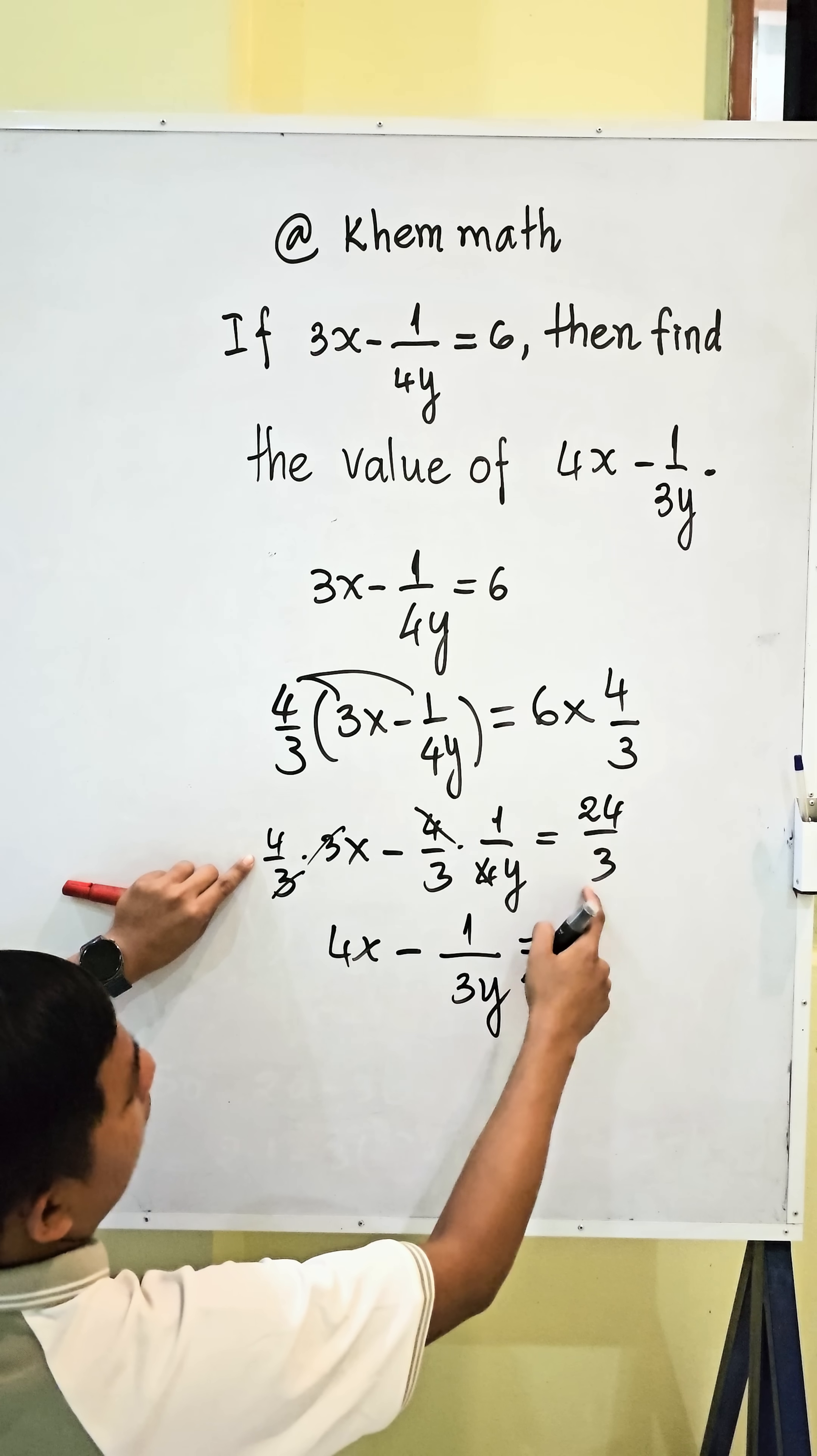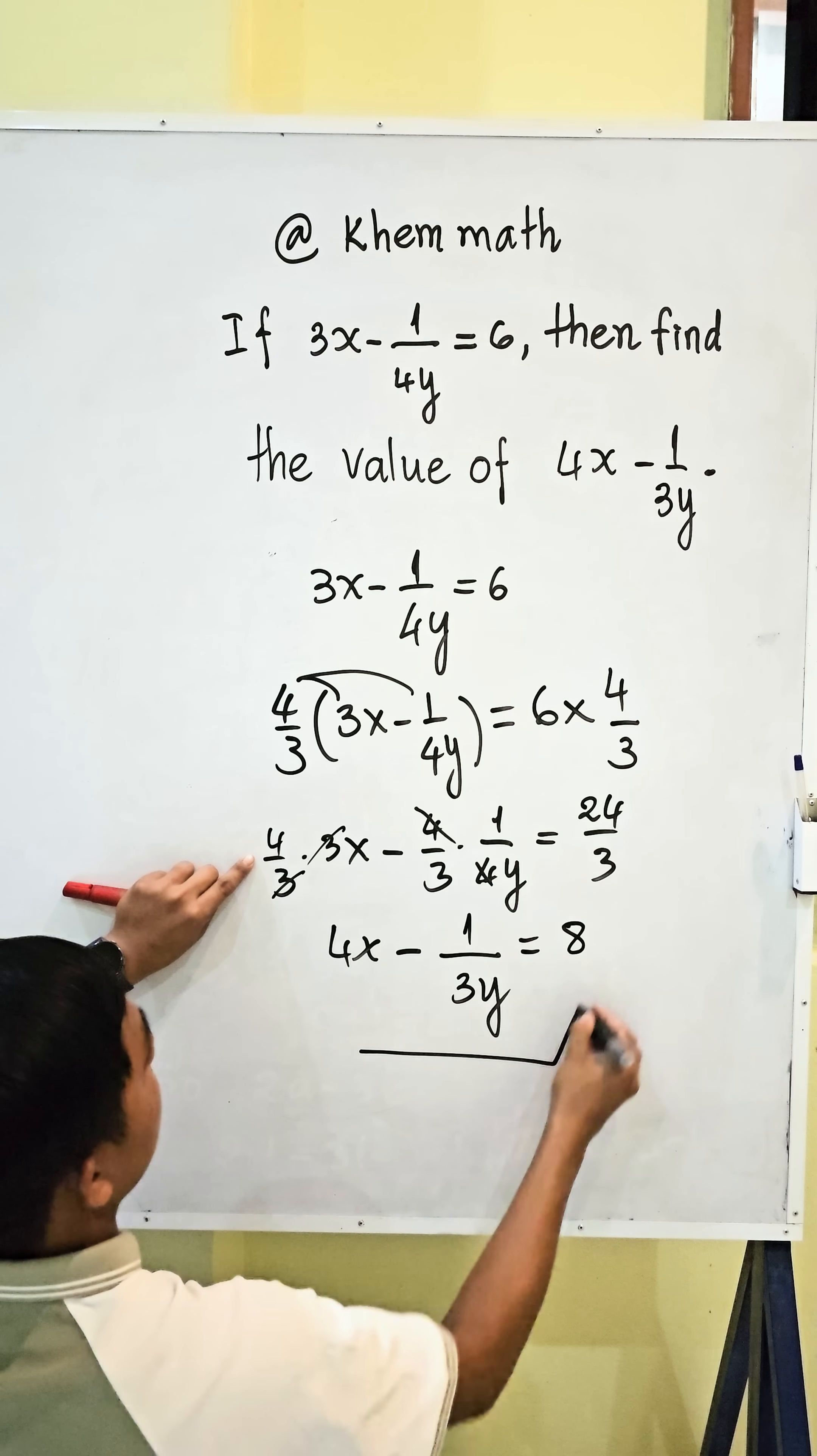And equal 24 divided by 3 equal 8. So, our answer is 8.